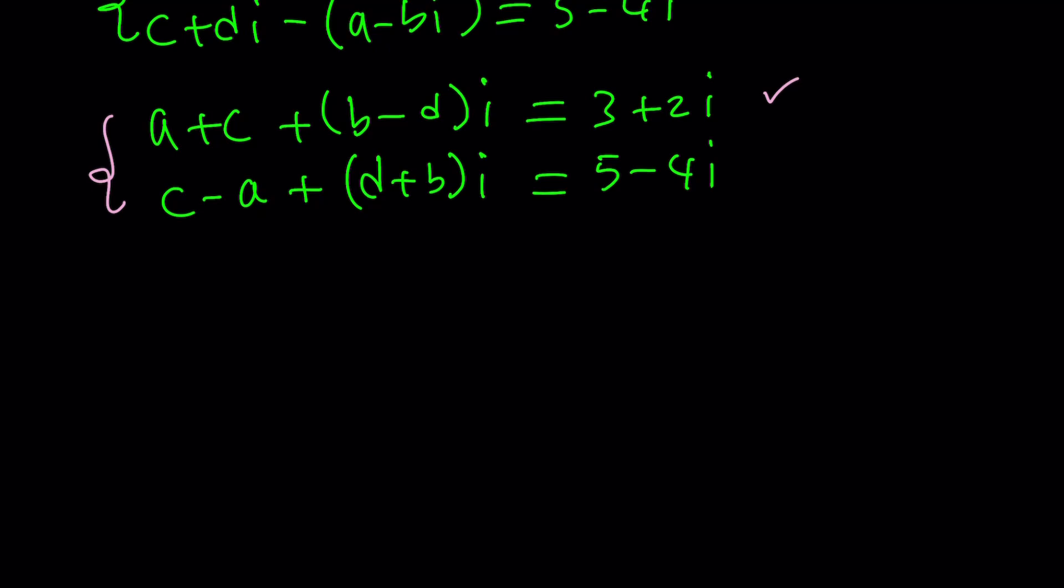So now we can safely say that A plus C is equal to 3, B minus D is equal to 2, C minus A is equal to 5, and D plus B is equal to negative 4. Even though we got four equations they can kind of be solved a little independently. You can kind of focus on these two equations for example.